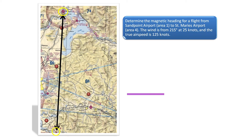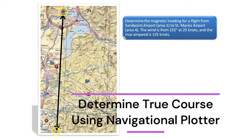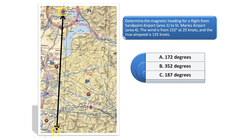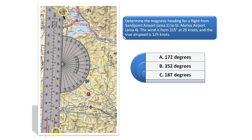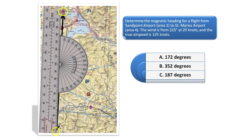In order to solve the problem, we first need to find the true course for the flight. Using a navigational plotter, we can see the true course is 180 degrees. Remember to lay the center of the navigational plotter along the nearest meridian line for the flight path and line up the navigational plotter on the route of flight.